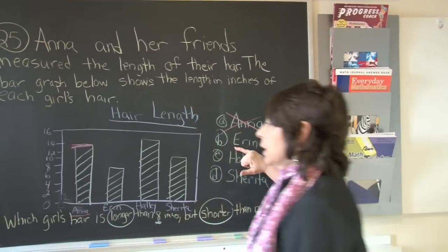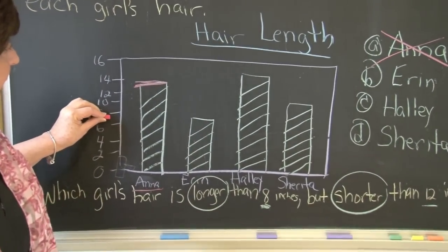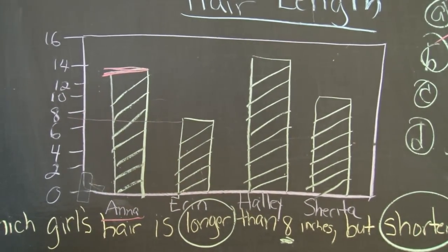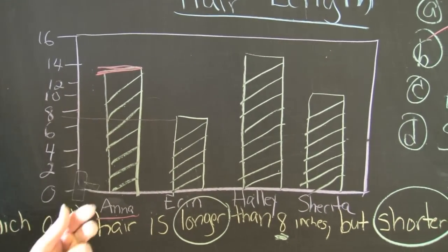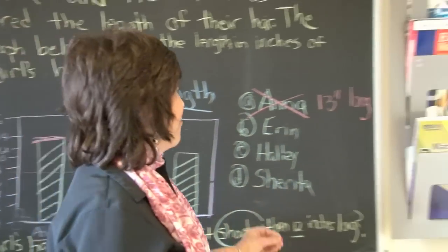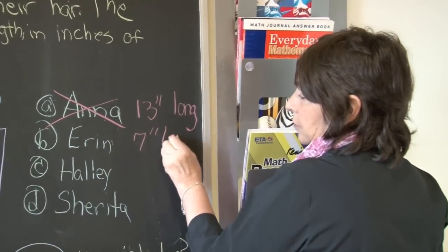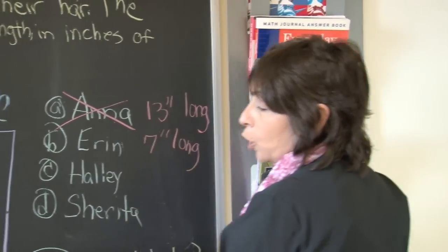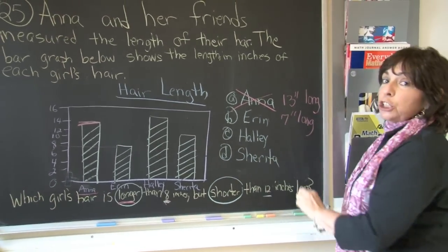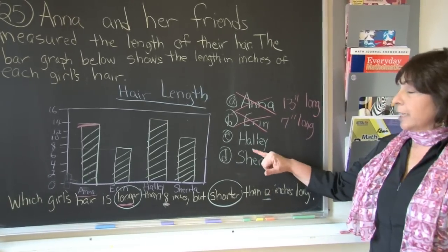Now let's look at Erin's hair. Erin's hair falls between six and eight — what is between six and eight? Six, seven, eight — so Erin's hair is seven inches long. Is that longer than eight? No, seven is shorter than eight. So it cannot be Erin.